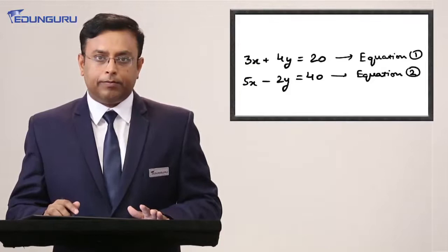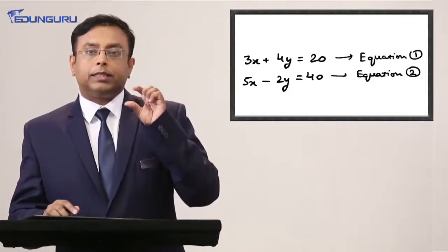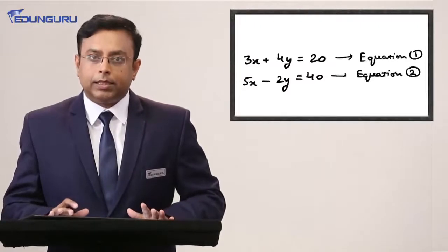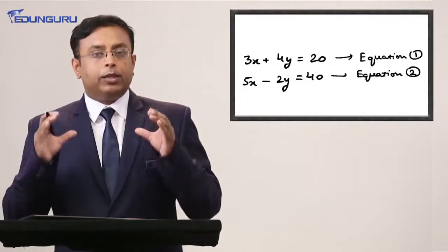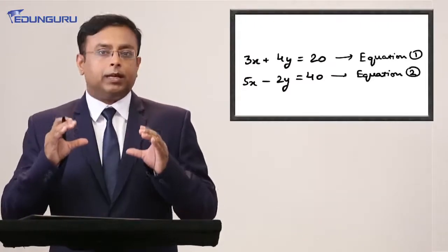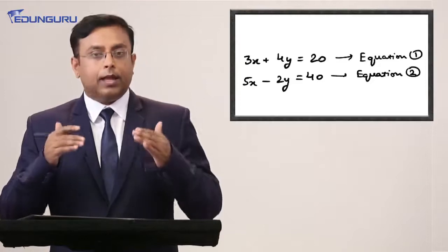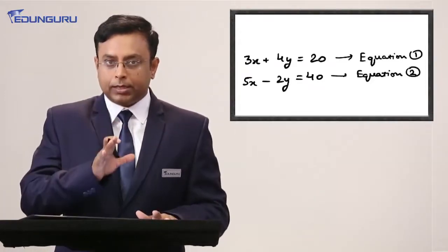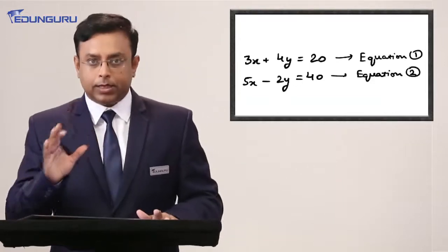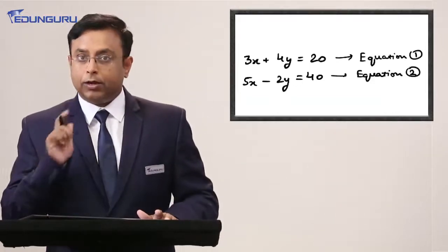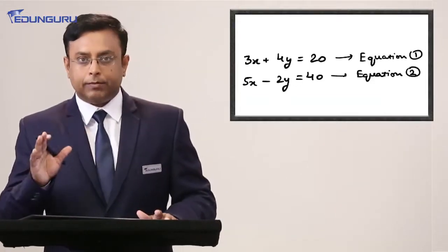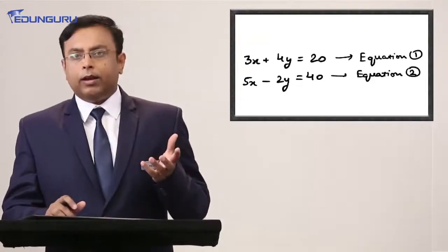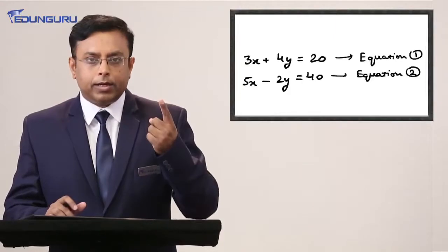We call this a simultaneous equation because both equations must be satisfied together — that is why we use the terminology 'simultaneous,' meaning together. It is equations, not just one equation. However, you might ask: can't we get the values of x and y with just one equation?